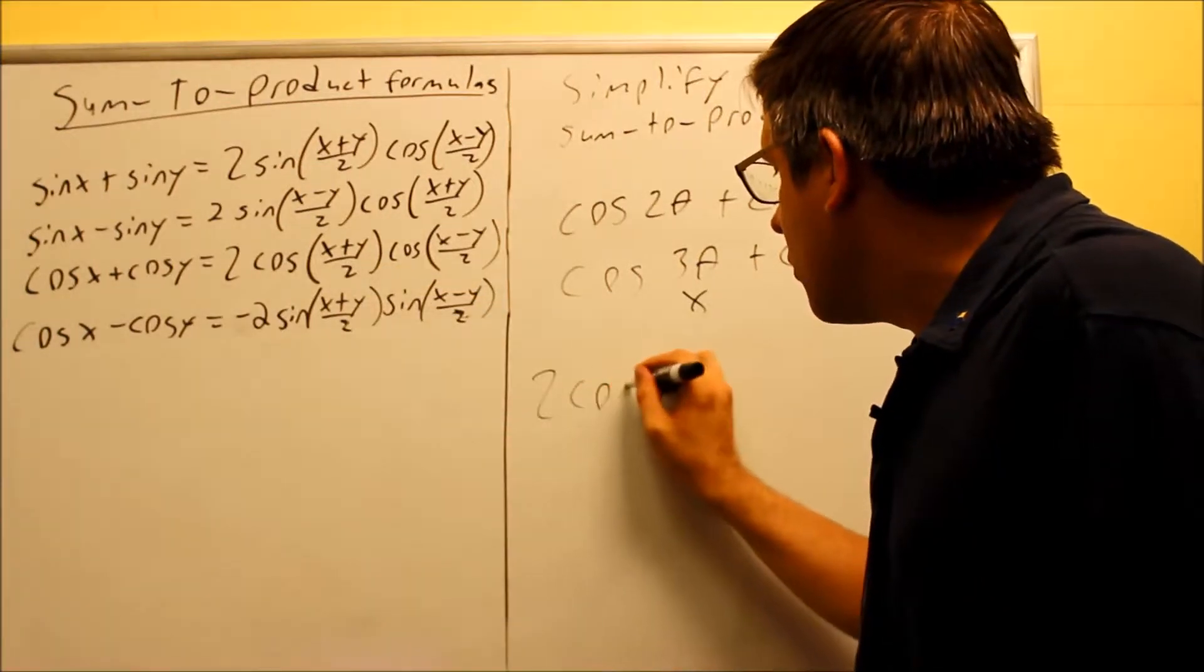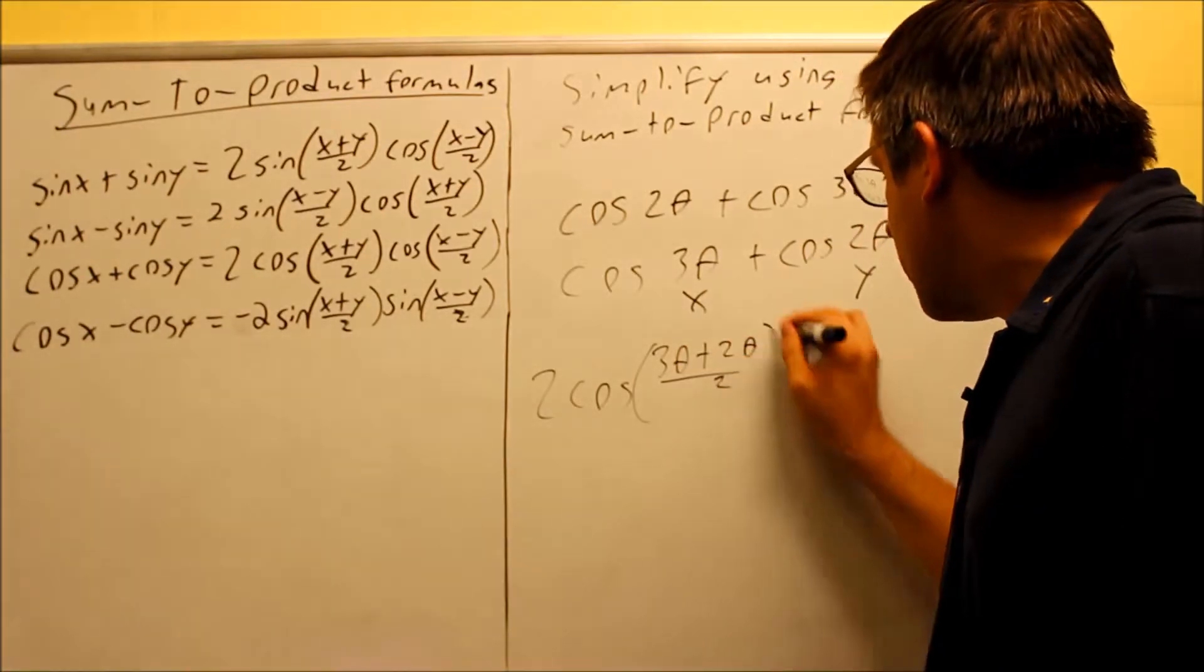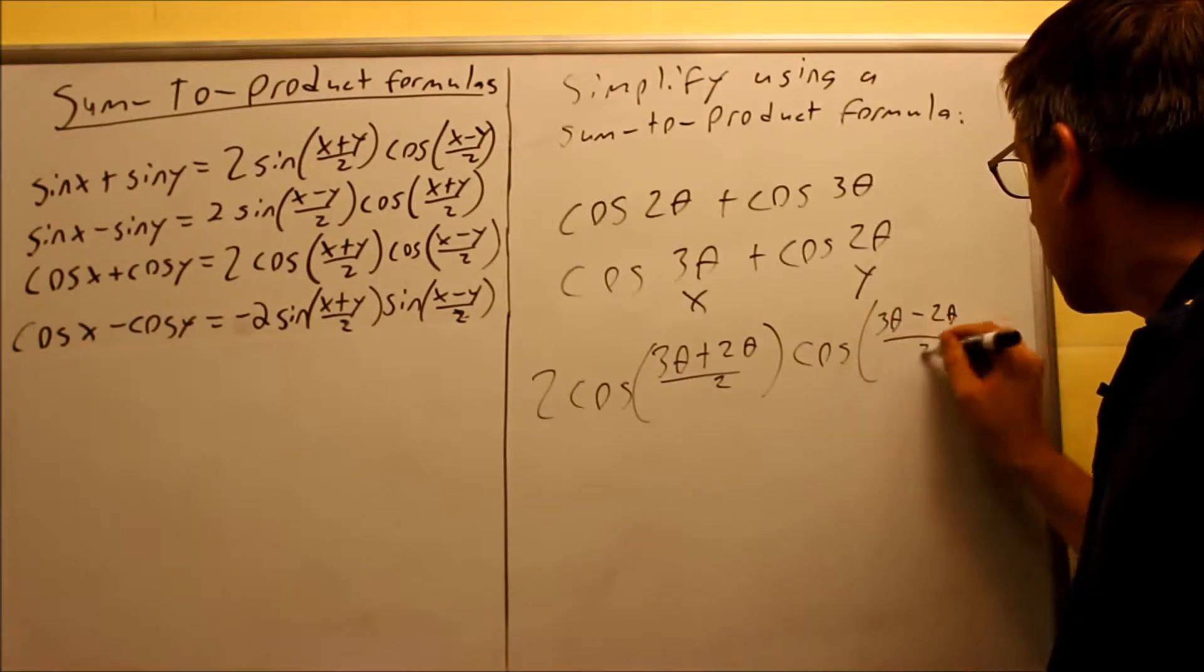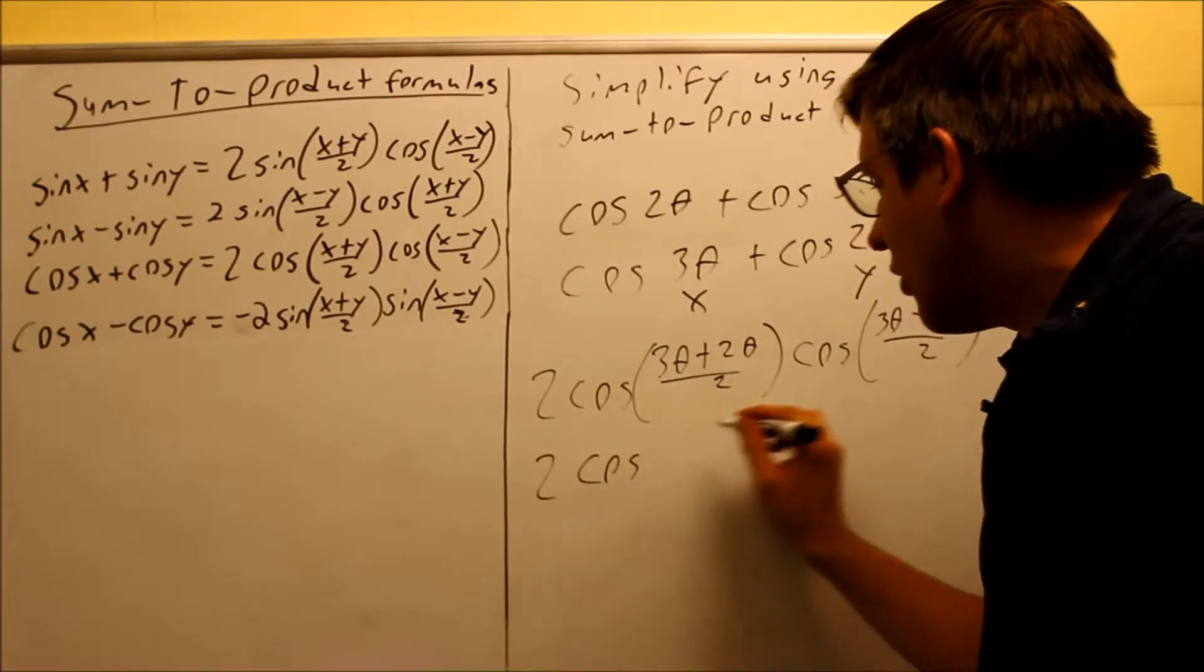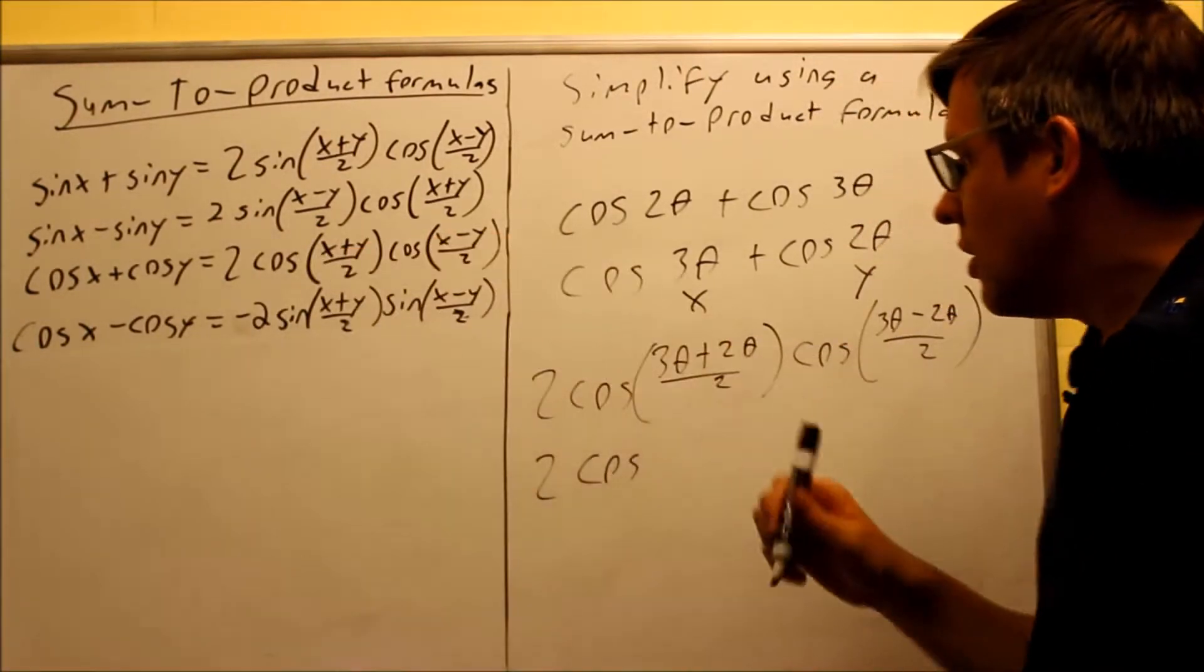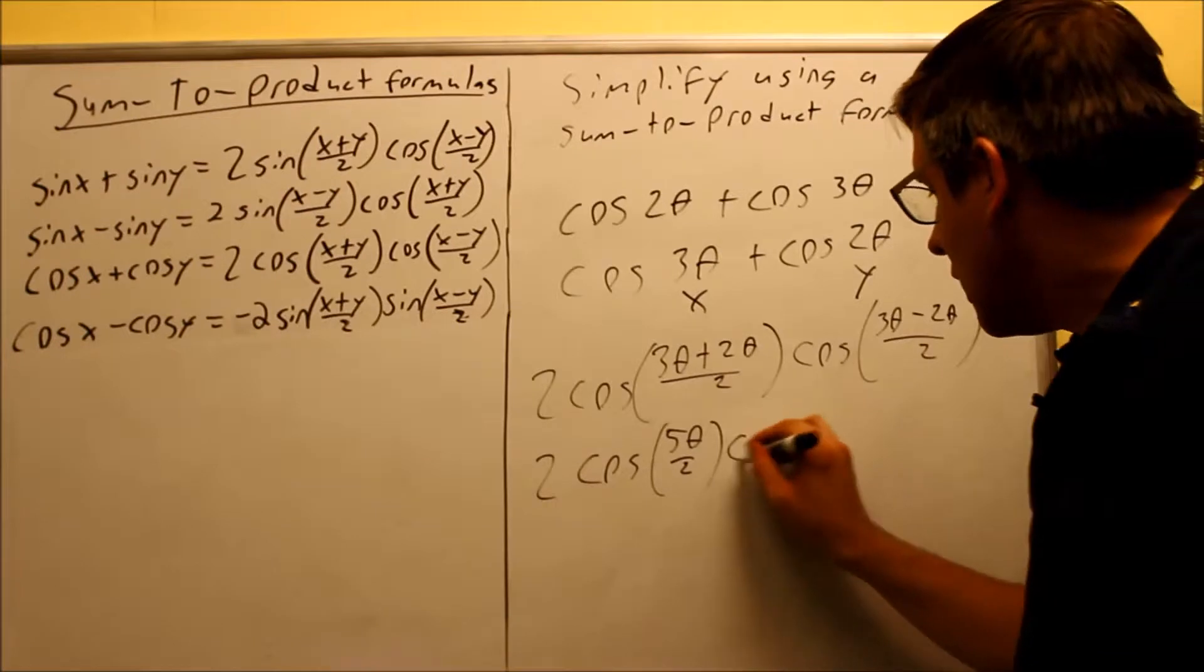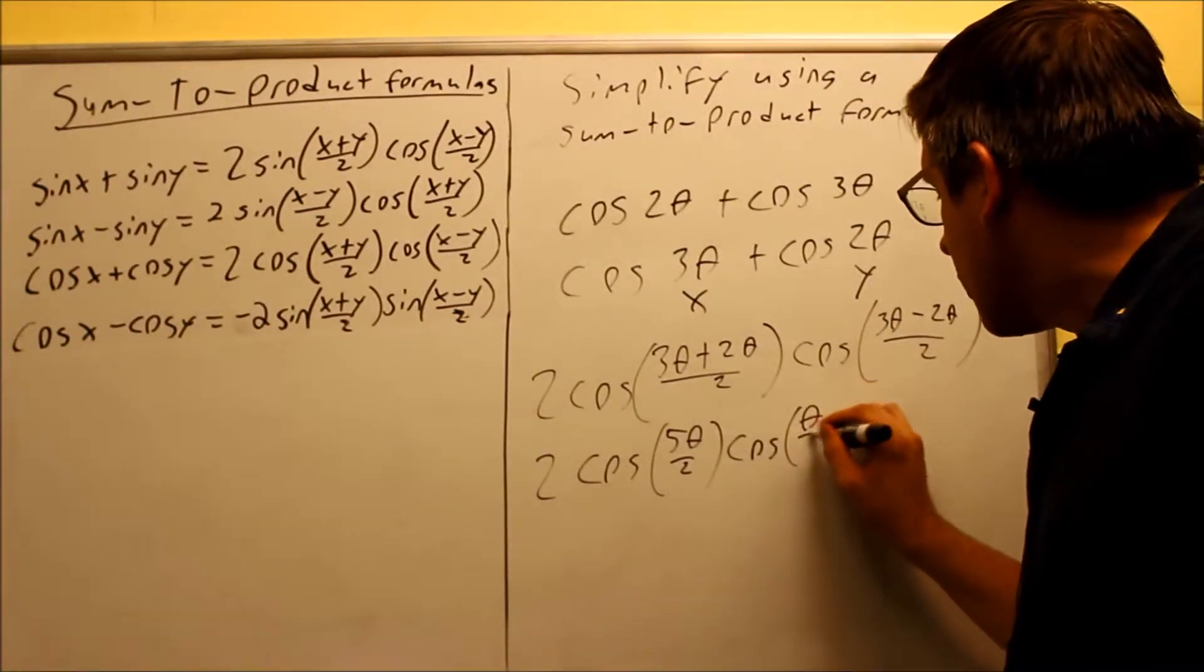I'm going to use the third formula, 2 cosine 3 theta plus 2 theta over 2 and I'm going to do cosine of 3 theta minus 2 theta over 2. I'm going to simplify this now inside since I've applied the formula, cosine cosine comes from that. That's going to be 5 theta over 2 which I can't do any more with to simplify and then I have cosine of 3 theta minus 2 theta over 2, that's theta over 2.